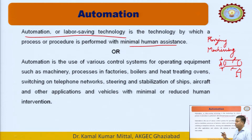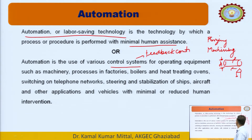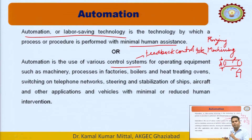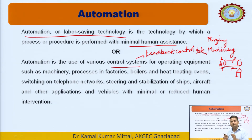Automation is the use of various control systems, like feedback control systems and open-loop control systems. A feedback control system gives feedback of the output variable. An input parameter is set that we want to obtain, and the output variable varies. A feedback sensor sends signals to the controller, and if there is a difference between the input parameter and output variable — suppose the initial value is 30 and the final value is 29 — the controller minimizes this error and sends signals to the actuator to stop functioning.